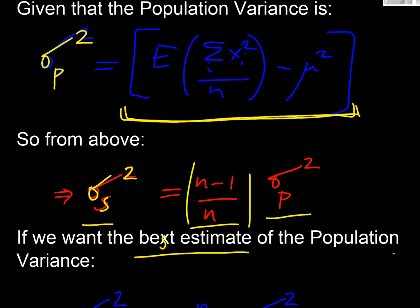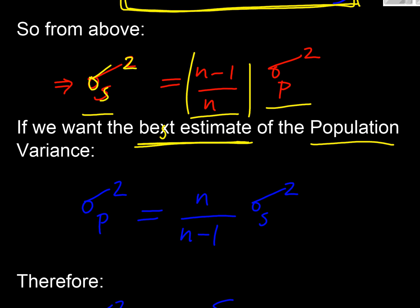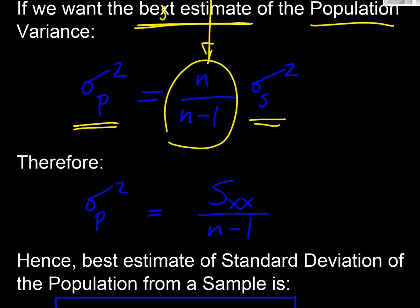So it's going to be that factor times the population variance, and of course what we're interested in is the best estimate of the population variance, not the sample variance. We're always interested in the population, and we're looking for our best estimate. So if we reverse this equation and make the population variance now the subject of the equation, we're going to do the reciprocal of the factor from above, and there's our sample variance there.